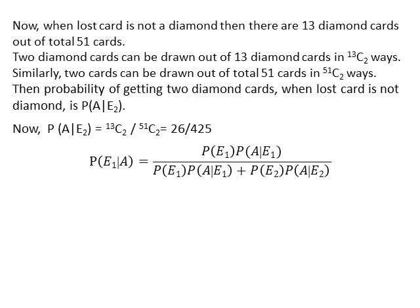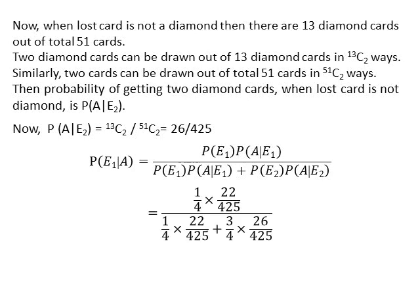Now we want to find P(E1|A). By Bayes' theorem, P(E1|A) equals PE1 multiplied by P(A|E1) divided by PE1 multiplied by P(A|E1) plus PE2 multiplied by P(A|E2). Substituting the values and simplifying, we get P(E1|A) = 11/50.